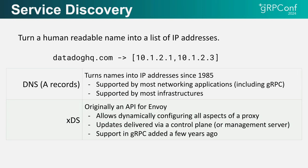An alternative to DNS is to use XDS. XDS is an API originally created for Envoy, and it has a very rich set of features. You can think of it as a replacement for DNS with a lot more features. In the last few years, gRPC added support to do service discovery directly through XDS.